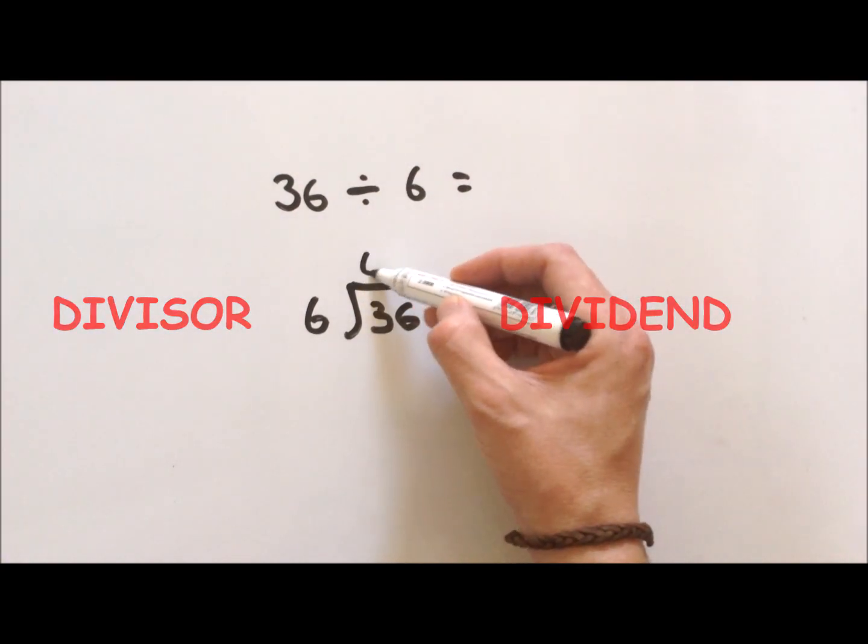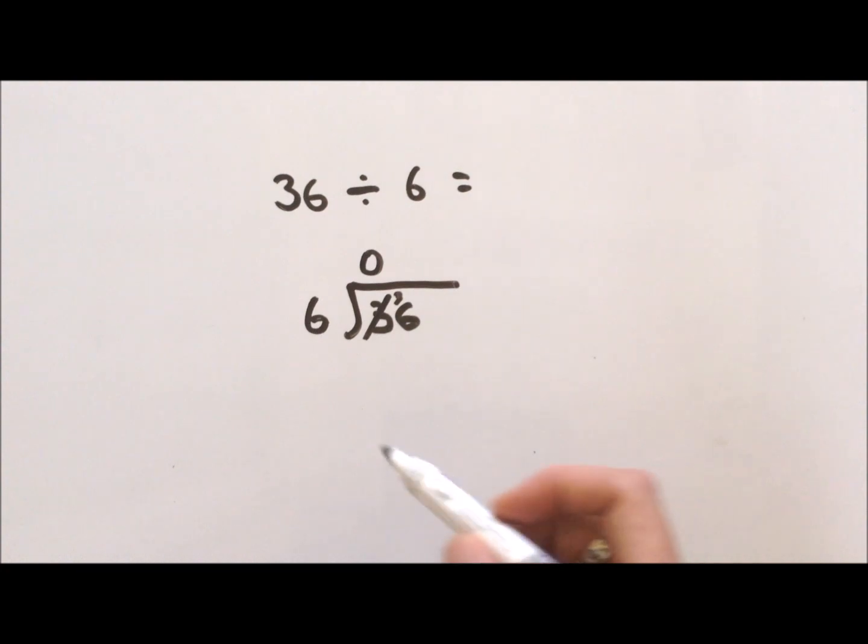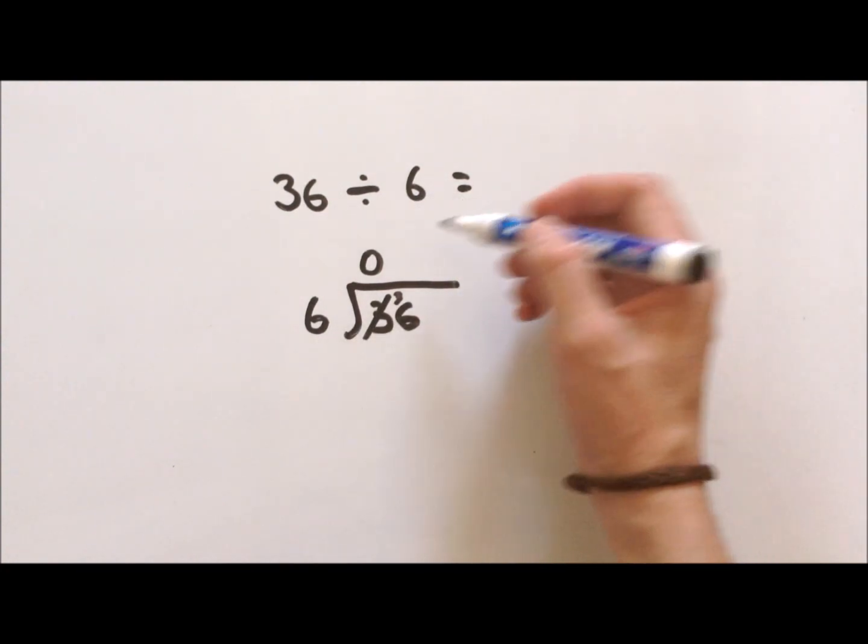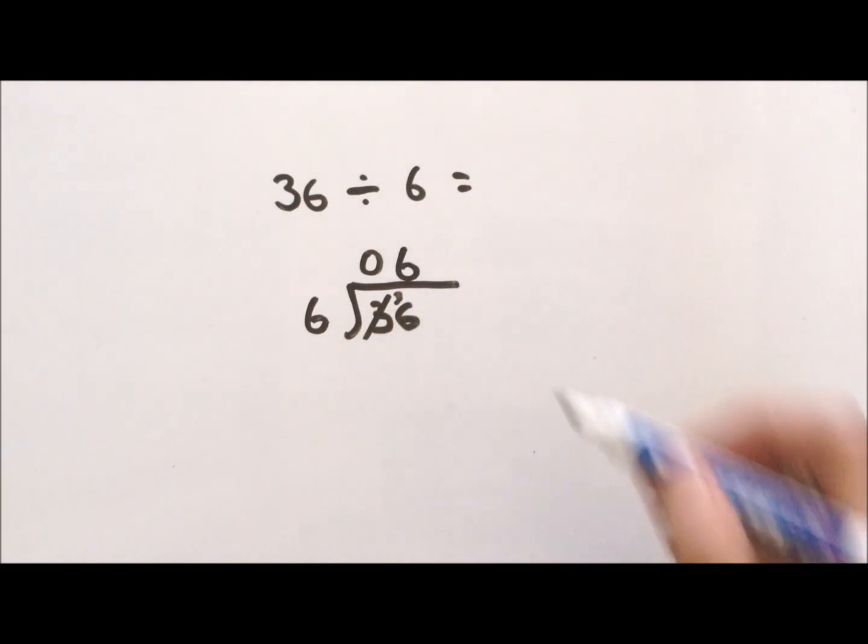We cross that out and put the 3 there. How many sixes go into 36? Well, if you know inverse relations, 6 times 6 is 36, so the answer is 6.